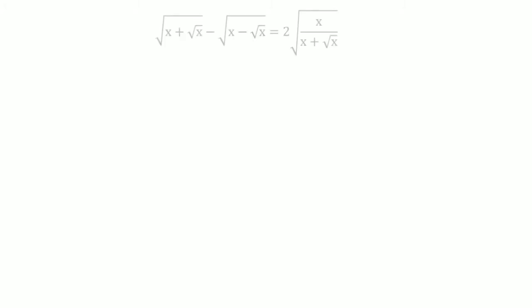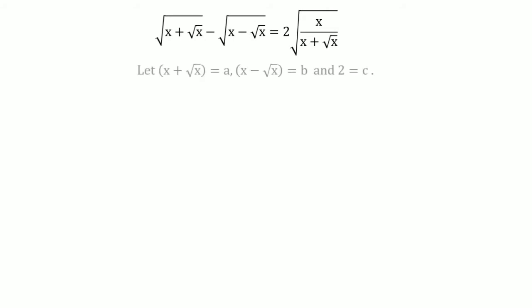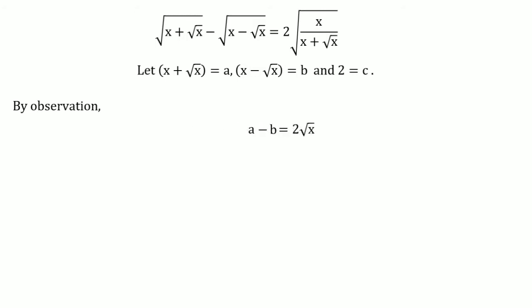Here is our system of equations, and to make it convenient we assign some variables. Let x + √x = a, and similarly x − √x = b, and let 2 = c. By observation, (x + √x) − (x − √x) equals 2√x, and since x + √x is a and x − √x is b, we have a − b = 2√x, so x = (a − b)/2.